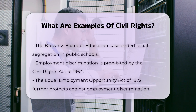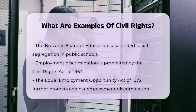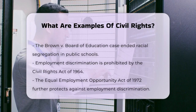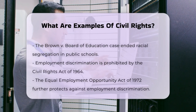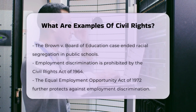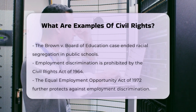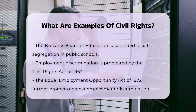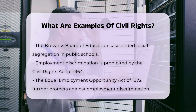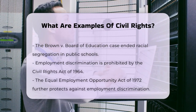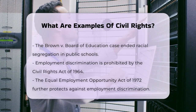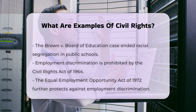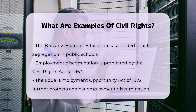Civil rights also protect individuals from discrimination in employment. The Civil Rights Act of 1964 and the Equal Employment Opportunity Act of 1972 forbid discrimination based on characteristics like race, religion, age, and gender. These laws ensure that everyone has an equal chance to secure and maintain employment.